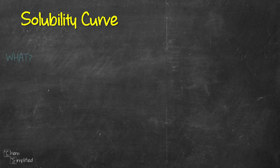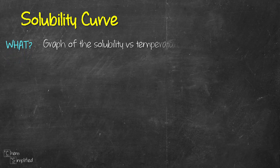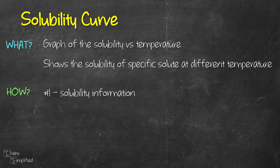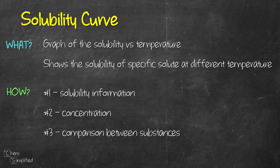A solubility curve is basically a graph that shows solubility versus temperature. It tells us the solubility of a specific solute at different temperatures in a given solvent. We can use the solubility curve to figure out how much solute can dissolve in a specific amount of solvent at a specific temperature, to determine if a solution is unsaturated, saturated, or supersaturated given the amount of solute, amount of solvent, and temperature, and to compare the solubility of various substances.